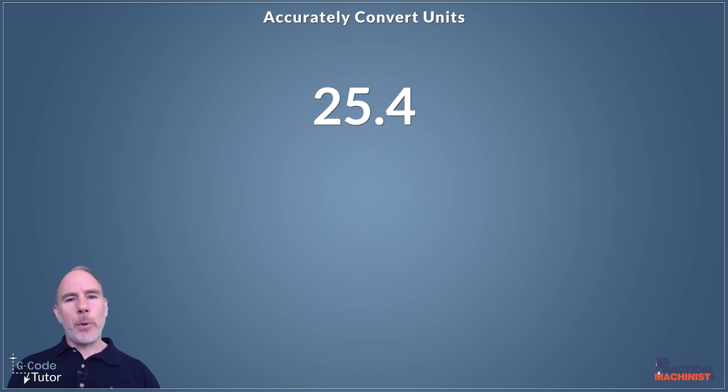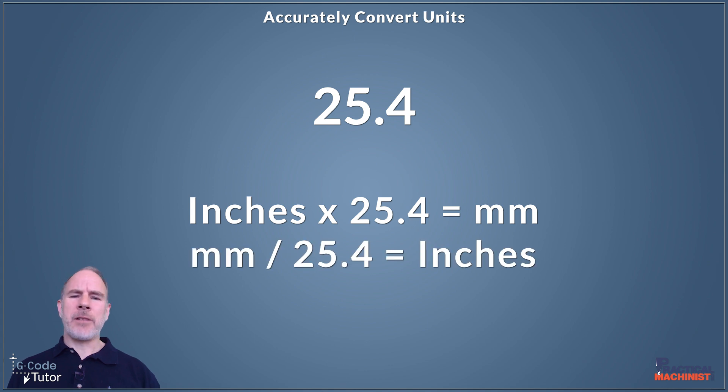There's 25.4 millimeters in an inch. If we multiply our imperial by 25.4, it gives us the metric equivalent. And if we take a metric value and divide it by 25.4, this accurately converts it into inches. By remembering 25.4, we can always easily and accurately convert between imperial and metric.